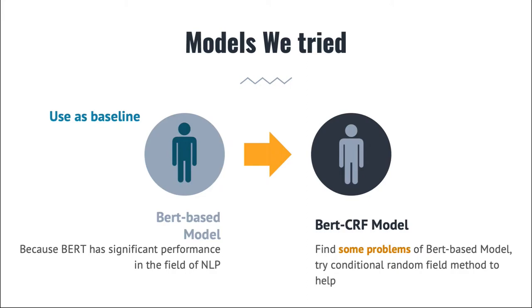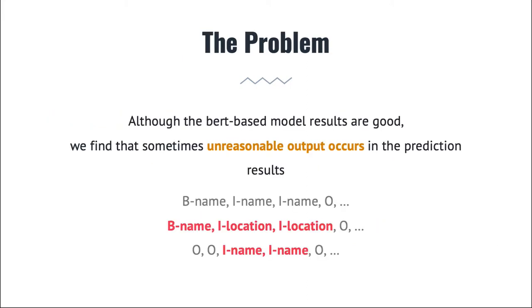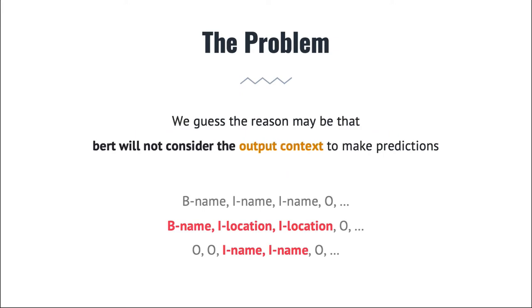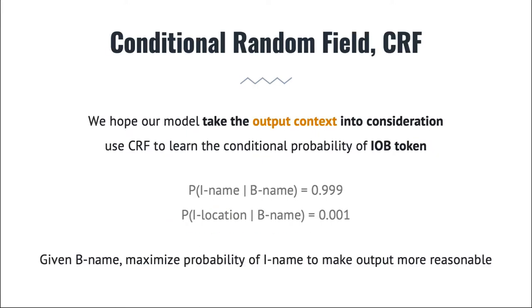Although BERT performs well in most cases, we found it has some unreasonable outputs occasionally. For example, sometimes the type of characters within a predicted entity will be inconsistent, or an entity ends without a beginning token — these circumstances are not allowed. BERT does not consider its output as context. We hope the model can consider context to improve the F1 score, so we use CRF to learn the transition probability of our IOB tokens. For example, knowing that the previous output is a B-token, we expect a greater probability that the next output is an I-token, making the final prediction as reasonable as possible.